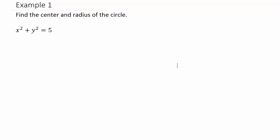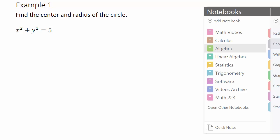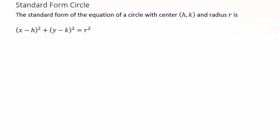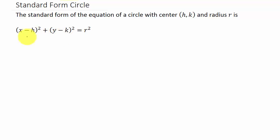In this video, let's look at finding the center and radius of a circle. First, let's take a look at the equation of a circle in standard form. The standard form of the equation of a circle with center (h, k) and radius r is: x minus h squared plus y minus k squared equals r squared.